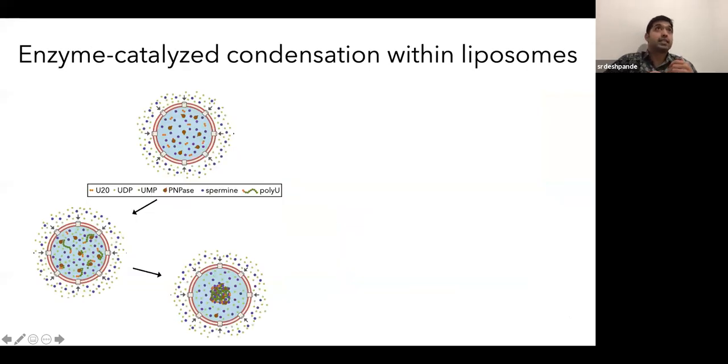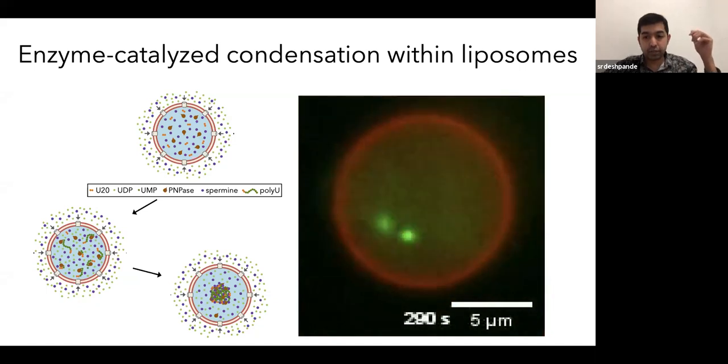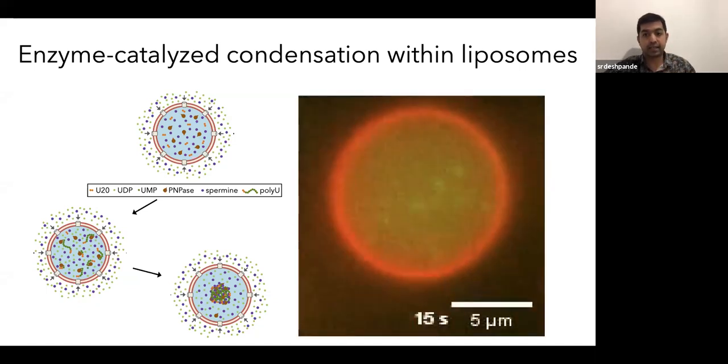We also made the scheme a bit more complex by having an enzyme catalysis condensation within these liposomes. So what we did was encapsulated PNPase, which is an enzyme that takes a seed RNA and polymerizes into a long single-stranded RNA. And by encapsulating PNPase and also having spermine, which can condense it with RNA and providing UDP from outside, we could bring about this enzyme catalysis condensation. And you can see that here in this video, where again, a similar process takes place. Once you add UDP from outside, you get this beautiful condensation inside the liposomes.